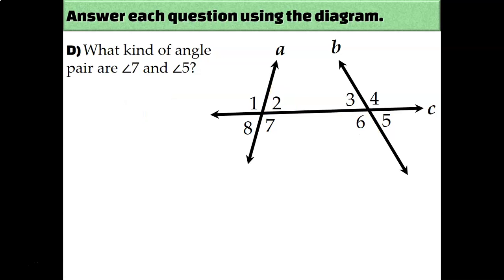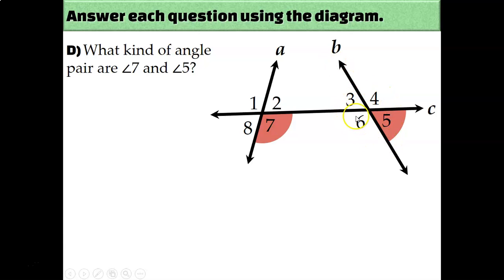What kind of angle pair are angle 7 and angle 5? Both of these are in the bottom right-hand corner. Out of the four angles created by the intersection of line A and line C, angle 7 is in the bottom right. And out of the four angles created by the intersection of line B and line C, angle 5 is also in the bottom right. That makes them corresponding angles.